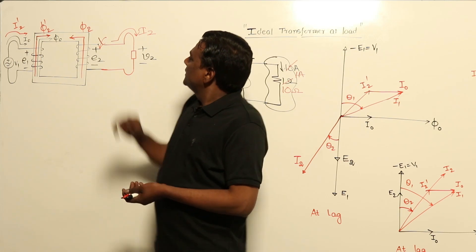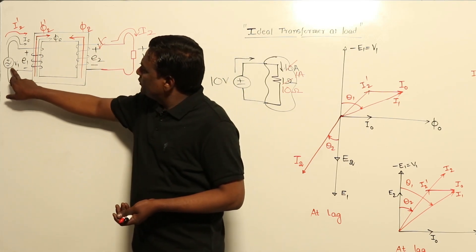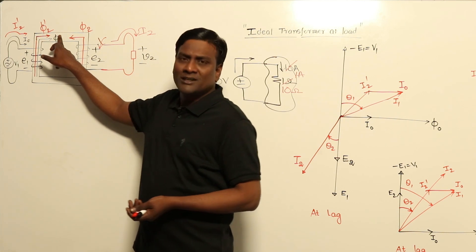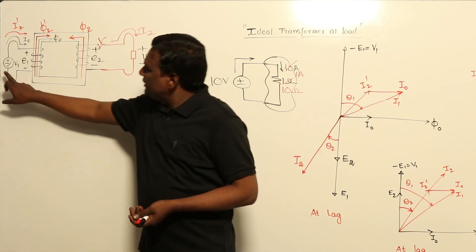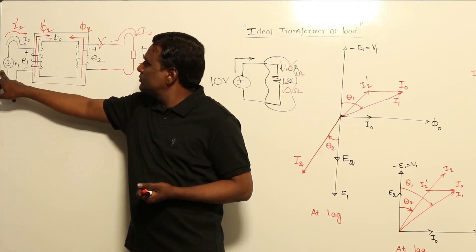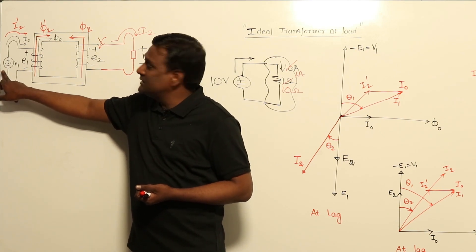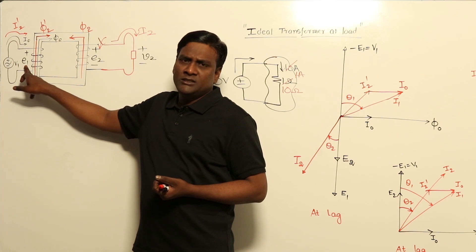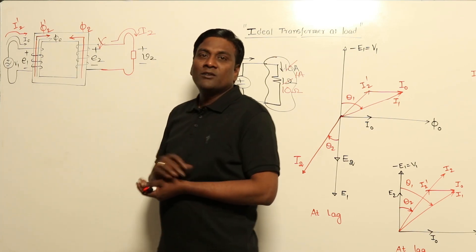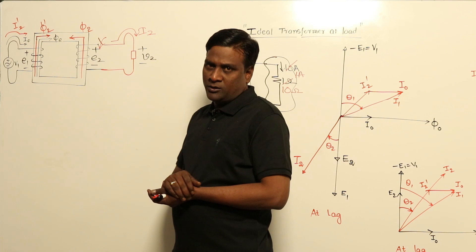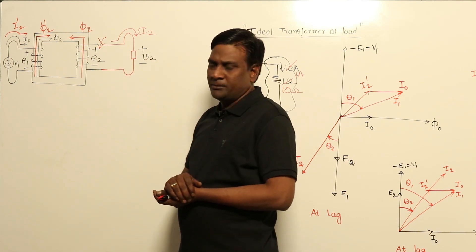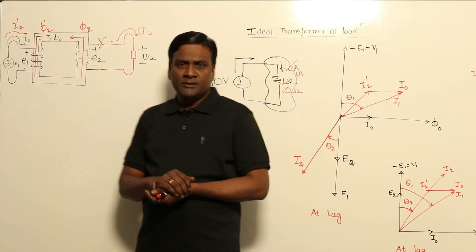At no-load conditions, V1 is 100 volts and some flux lines are created. V1 cannot be changed because it is an ideal voltage source — an infinite source. So if V1 cannot change, E1 also will not change, and if E1 cannot change, the operating flux φ₀ also cannot change. Now if I close the switch, what will happen?